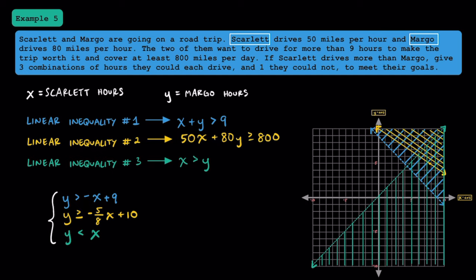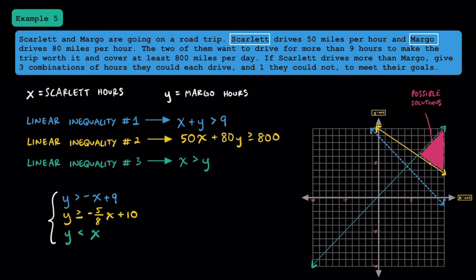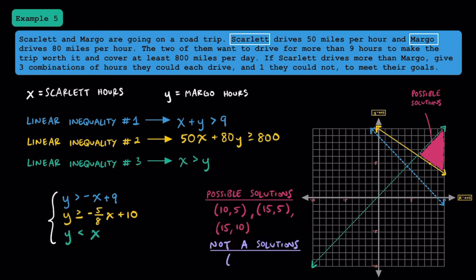Cleaning up the graph, this region represents all the possible solutions. Some possible solutions are (10, 5) where Scarlett drives for 10 hours and Margo drives for 5 hours, (15, 5) where Scarlett drives for 15 hours and Margo drives for 5 hours, or (15, 10) where Scarlett drives for 15 hours and Margo drives for 10 hours. An example of a point that's not a solution would be (5, 10) — while it works for the first two inequalities, it doesn't work for the third one where Margo has to be driving less than Scarlett. Keep in mind that while there are infinitely many possible solutions, there are also infinitely many solutions that don't work.